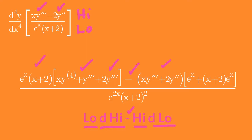This is another round of the product rule. Copy e raised to x, then differentiate x plus 2, which gives 1 — no need to write it. Plus: copy x plus 2, and this time differentiate e raised to x, which is e raised to x. Don't forget to square the denominator: e raised to 2x times the square of (x plus 2).